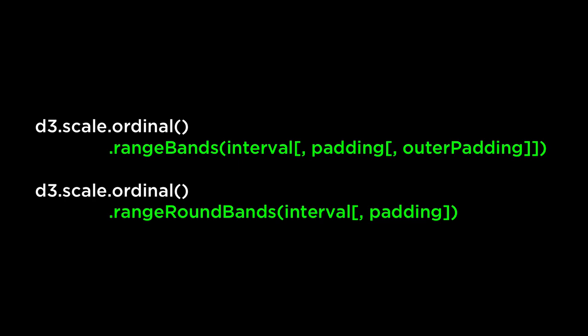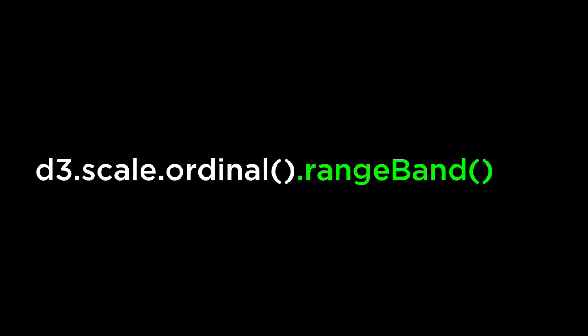D3.scale.ordinal.rangeBands and D3.scale.ordinal.rangeRoundBands are for ranges that have a specified continuous interval. The interval is a two-element array representing the minimum and maximum numeric value, subdivided into N evenly spaced bands where N is the number of unique values in the input domain. Padding corresponds to the space allocated between bands, and outer padding is for before and after the entire group. rangeRoundBands is the same as rangeBands but ensures the band width and offset are integer values, avoiding anti-aliasing artifacts. Once set, rangeBand returns the band width.